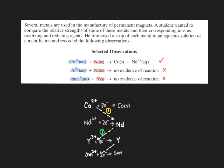So in this table our strongest oxidizing agent is in the top left corner, that is cobalt 2 plus, and our strongest reducing agent is in the bottom right corner, that is samarium solid.